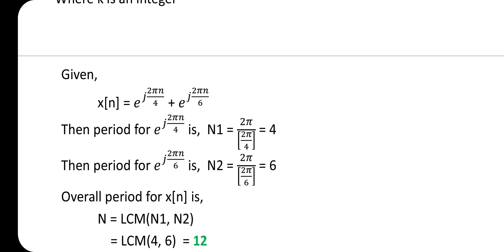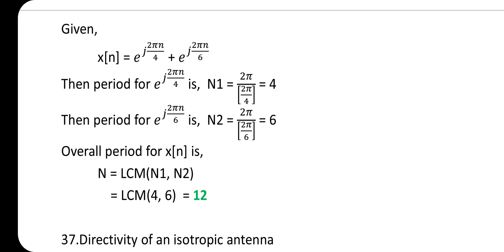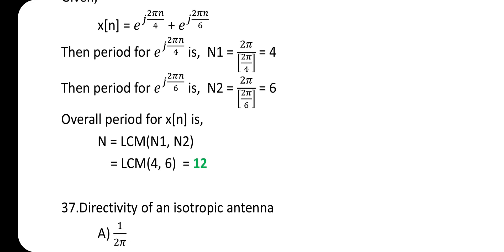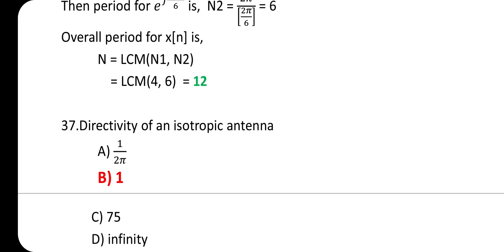Similarly, the time period for e^(j2πn/6) is n2 = 2π/ω, where ω = 2π/6, giving n2 = 6. To find the overall period for x(n), n = LCM(n1, n2). Here, LCM(4, 6) = 12.